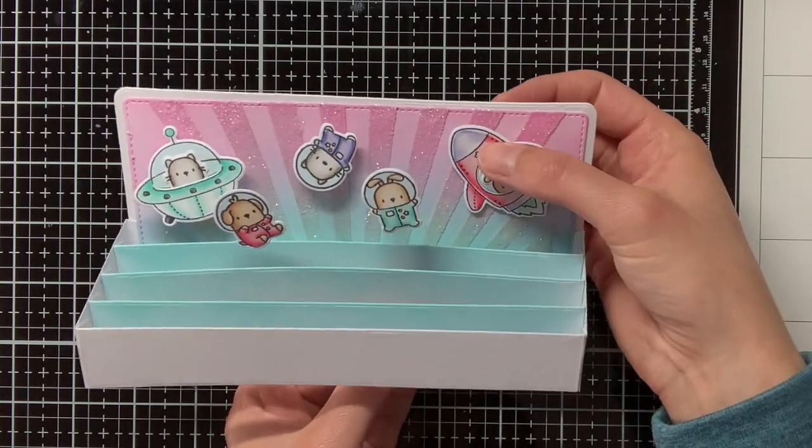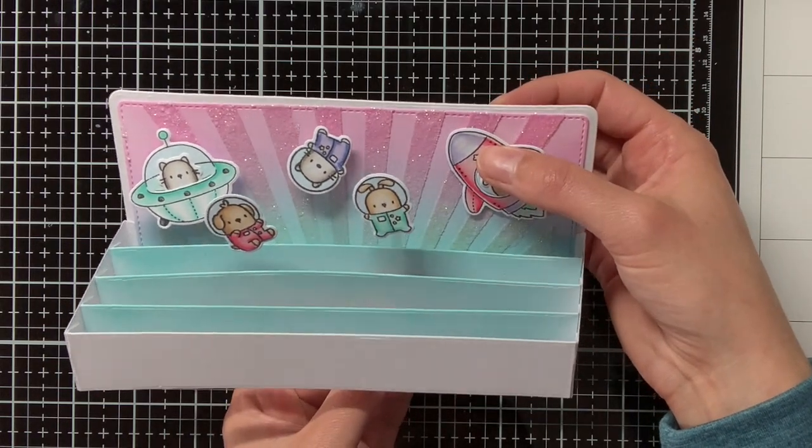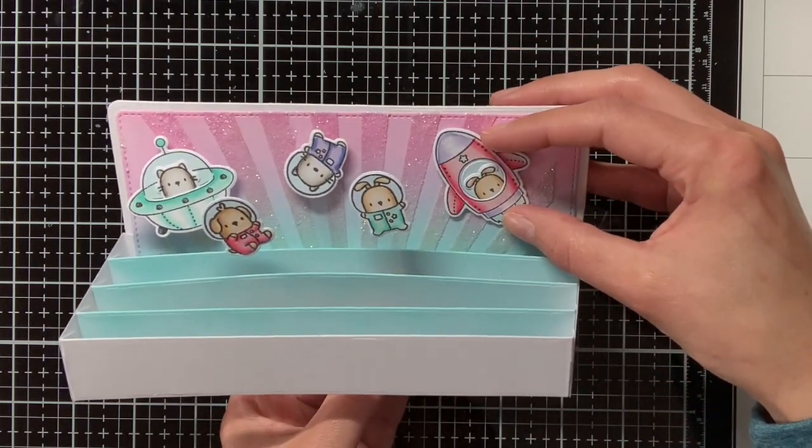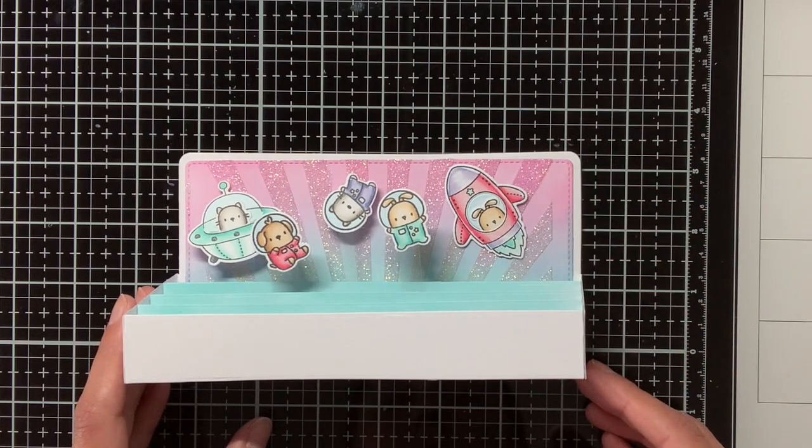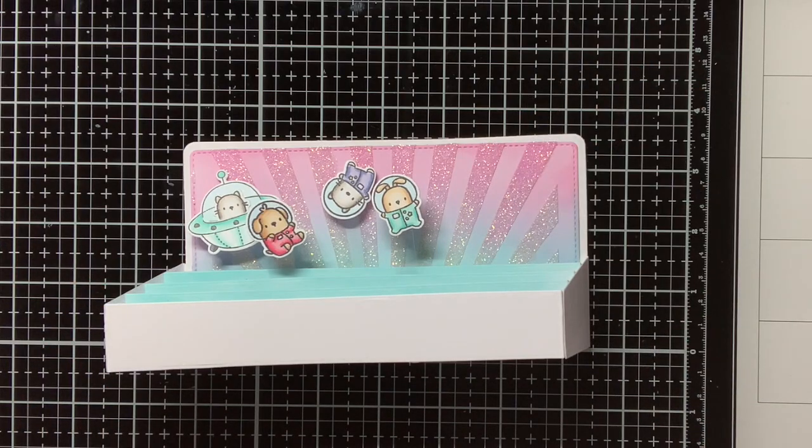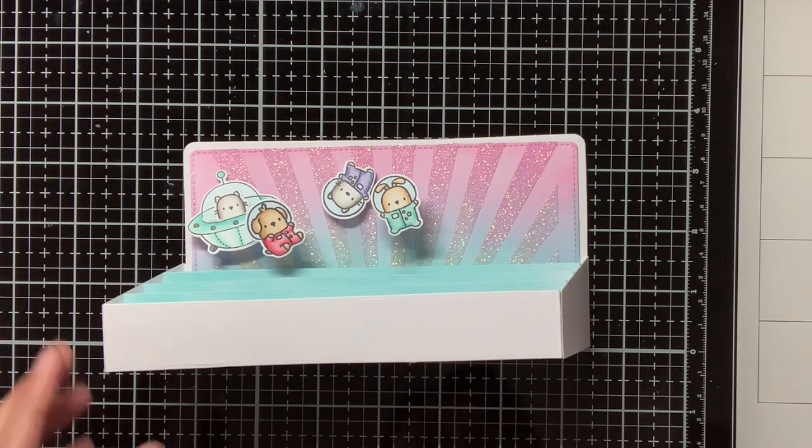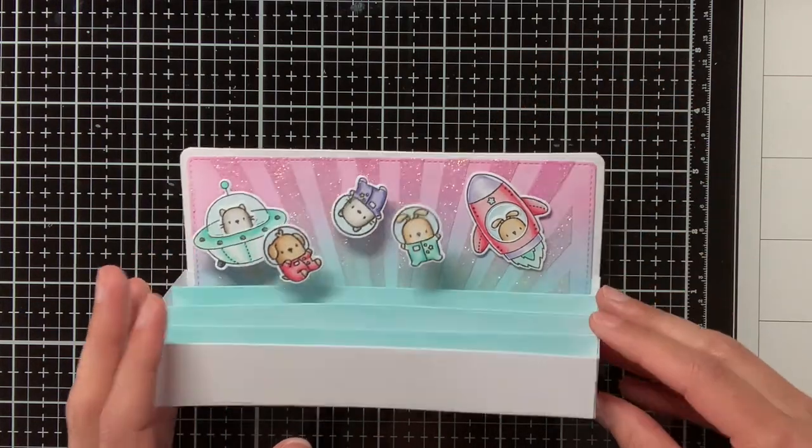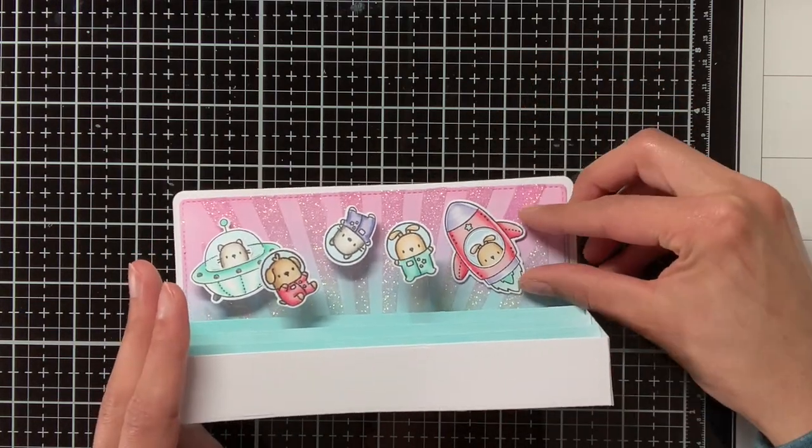One spaceship I have adhered with the acetate, but the other one I am going to adhere directly on the background. I thought this would add more depth and dimension to the card, but I was also a little bit afraid that this spaceship would be a bit too heavy for the acetate, so it would be quite hard to hold it up, and then it would sort of fall over, which I did not want.